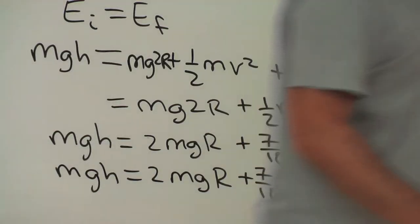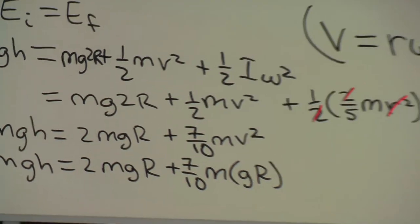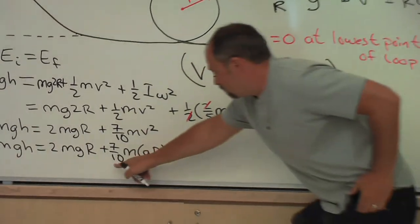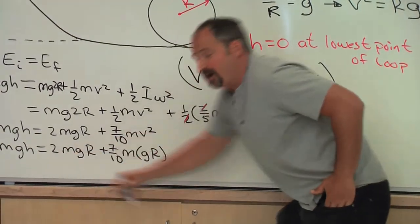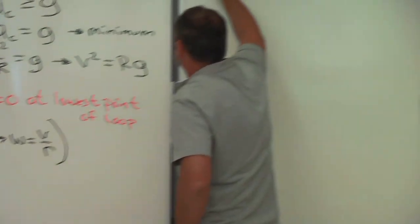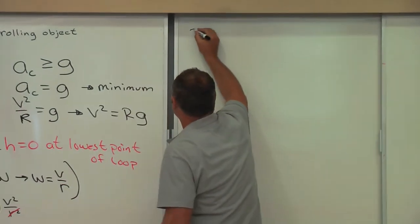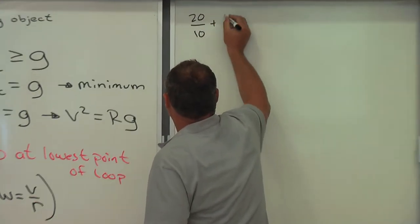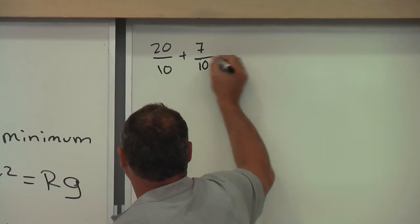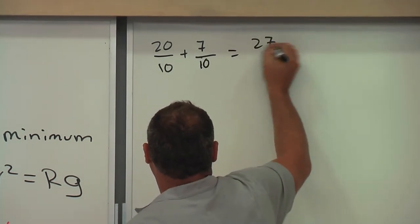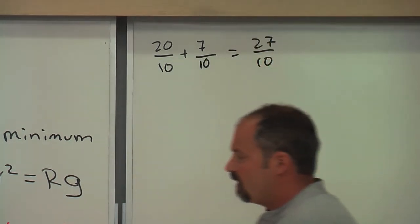And now we can combine these two terms. I'll do that over here on this sideboard. What do we have? A 7/10 here and a 2 there, so let's do the fraction. The common denominator is 10, so that would be 20/10 plus 7/10, that's 27/10.